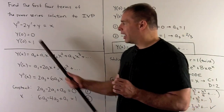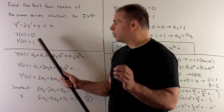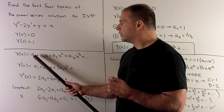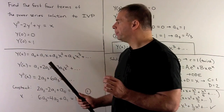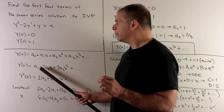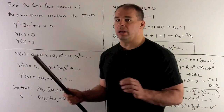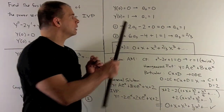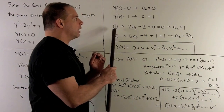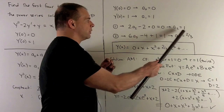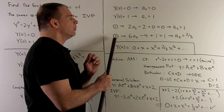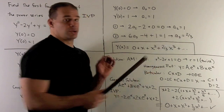Applying the initial conditions: putting zero into the power series leaves us with a zero, so a zero equals zero. For y prime, putting zero in leaves us with a one, so a one equals one. Substituting these into equation one gives us a two equals one. Then substituting a one and a two into equation two gives a three equals two thirds.